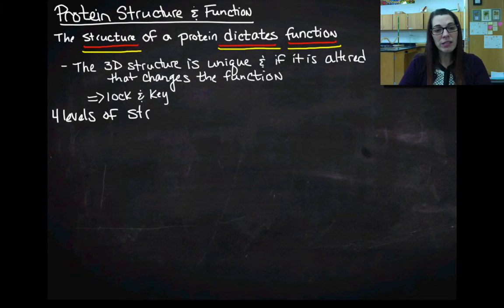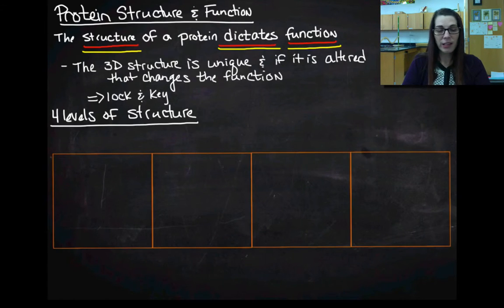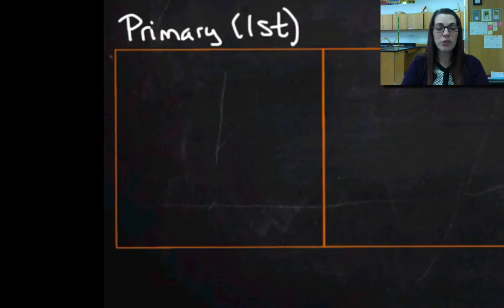So there are four levels of structure that we talk about in proteins, and we're going to talk about each of these individually. The first level is the primary level, and the first level of protein structure is really easy. We've talked about it a bunch already. It's just the sequence of amino acids.